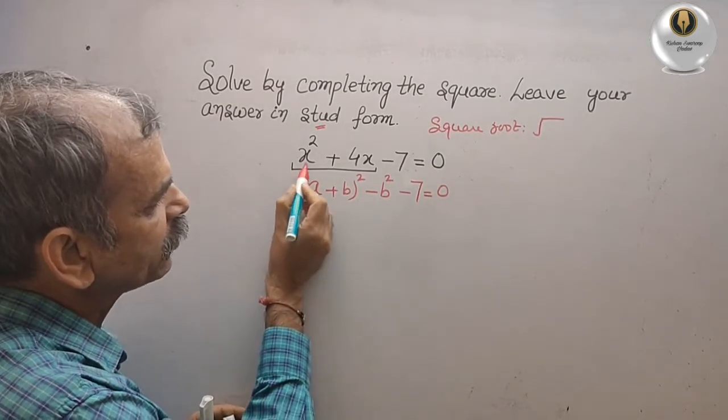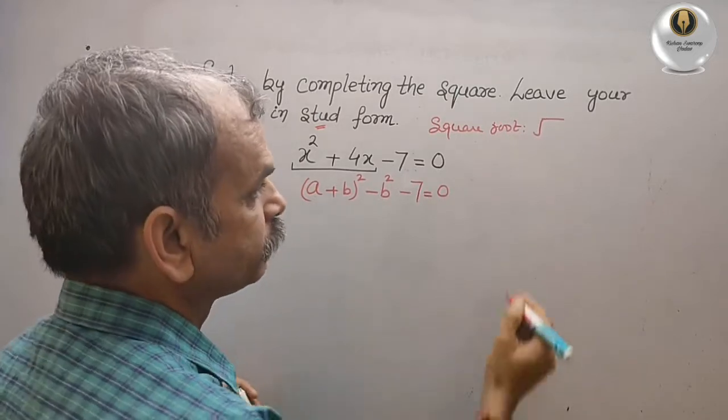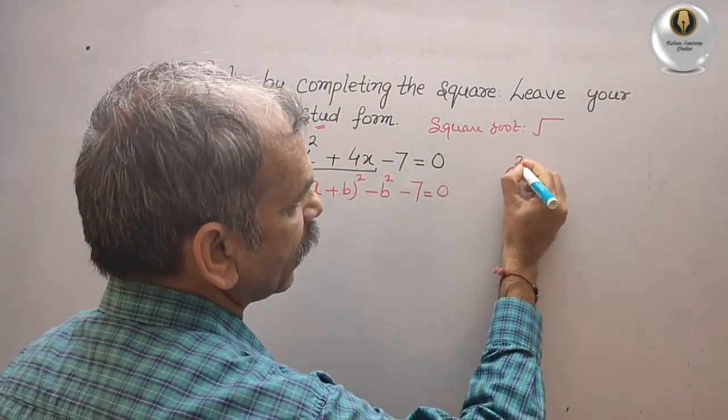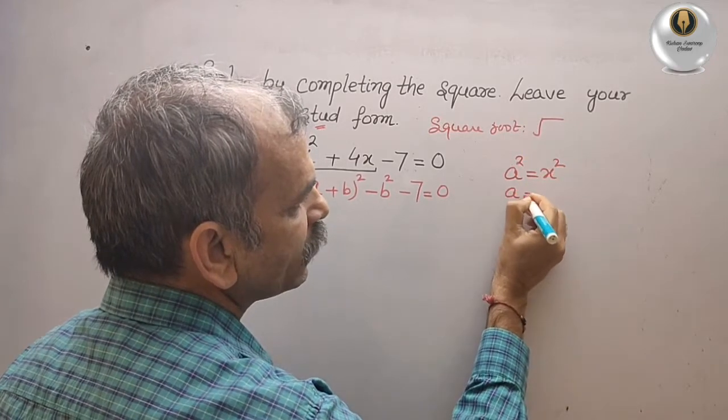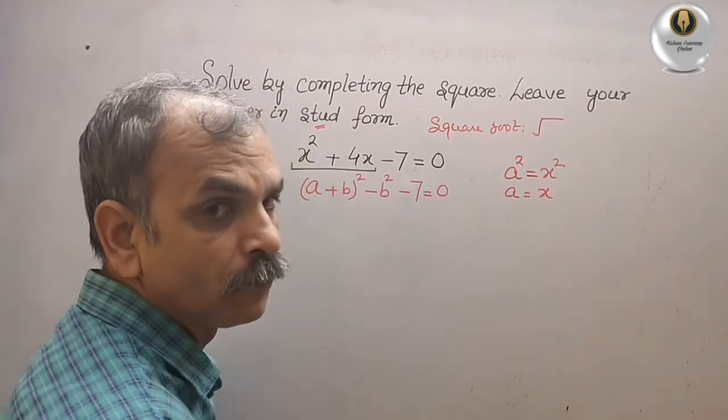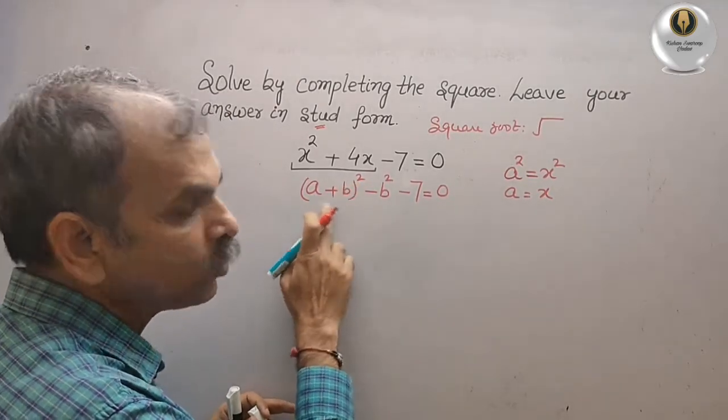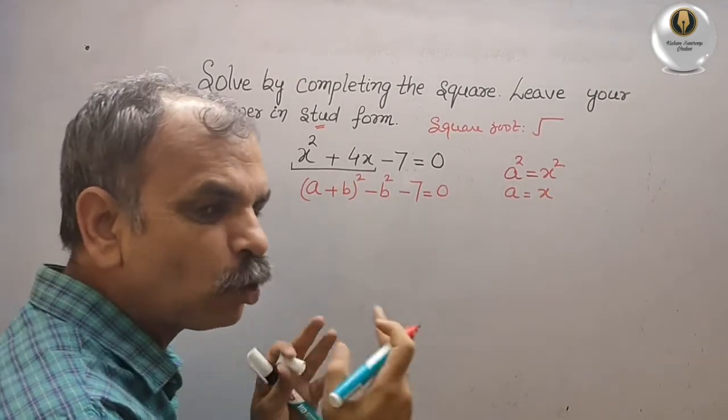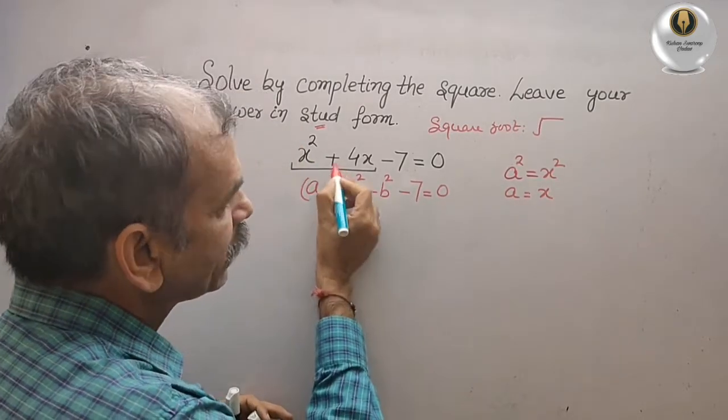Now compare this: a² is your x². Now if a² is your x², then a is equal to x. In between, if you solve this you will get 2ab also, so that 2ab is your middle term.